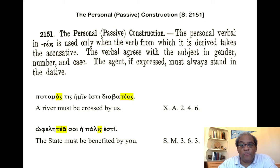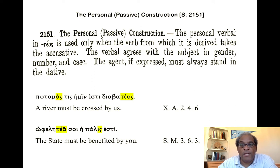The personal construction, which is passive: the personal verbal in -teos is used only when the verb from which it is derived takes the accusative. The verbal agrees with the subject in gender, number, and case. The agent, if expressed, must always stand in the dative. The personal verbal in -teos is used only when the verb from which it is derived takes the accusative. The verbal agrees with the subject in gender, number, and case. The agent, if expressed, must always stand in the dative.